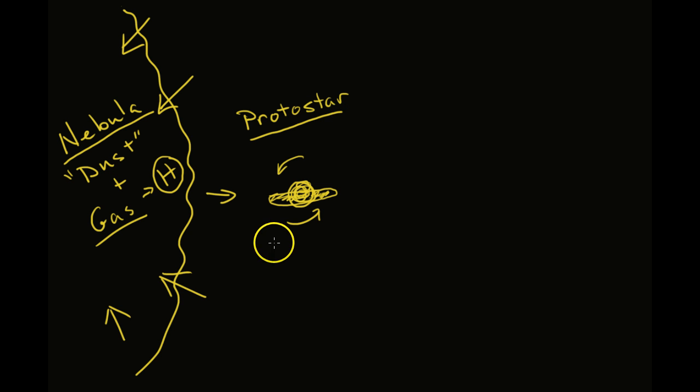And the protostar, because of its rotation and its pull of gravity, crashes those hydrogen molecules, hydrogen atoms, and it's hot enough where the hydrogen will fuse into helium and form a new element. And this is the process of nuclear fusion.